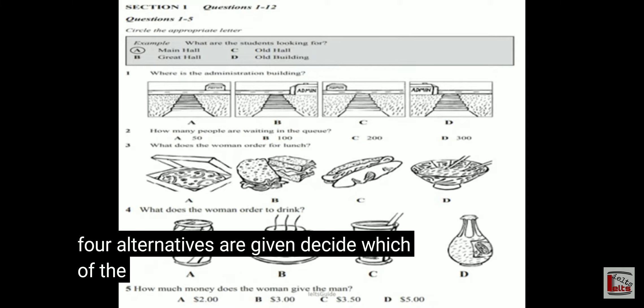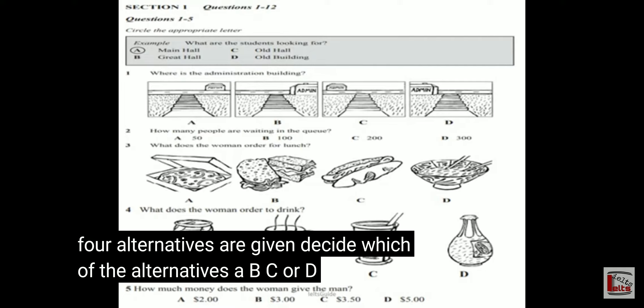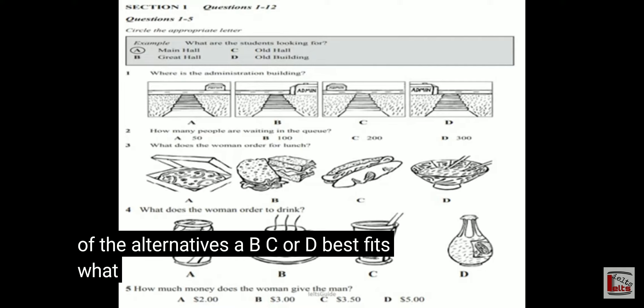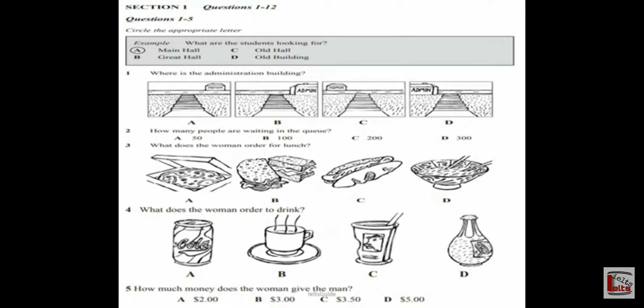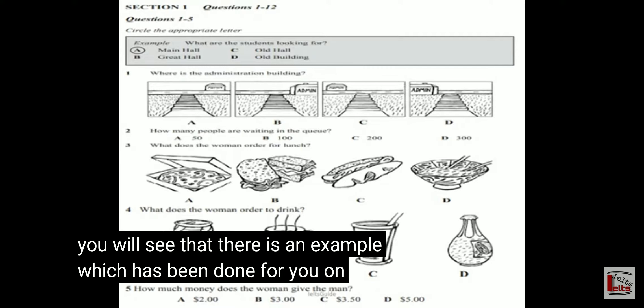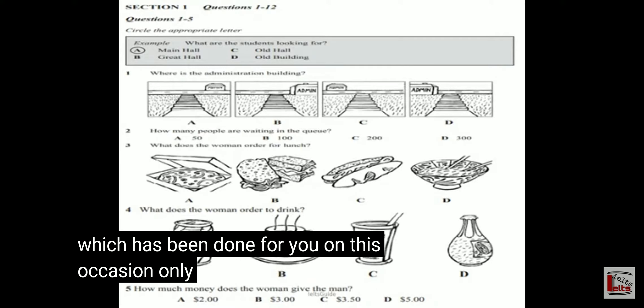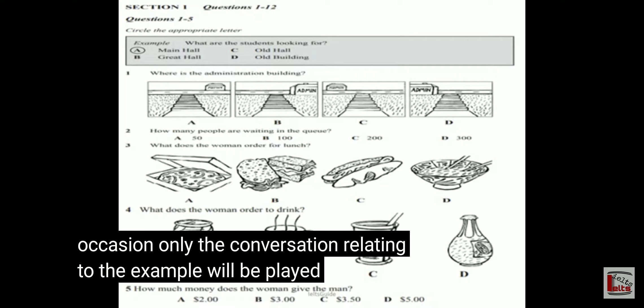Decide which of the alternatives — A, B, C or D — best fits what you hear on the tape, and circle the appropriate letter. You will see that there is an example which has been done for you. The conversation relating to the example will be played first.